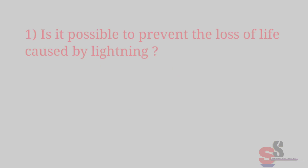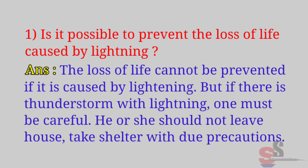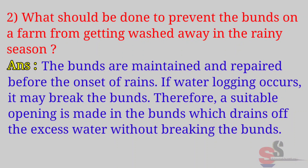Textbook page 64 — Can you tell? First: Is it possible to prevent loss of life caused by lightning? Answer: The loss of life cannot be prevented if it is caused by lightning. But if there is a thunderstorm, one must be careful and not leave the house. Second: What should be done to prevent the bunds on a farm from getting washed away in the rainy season? Answer: The bunds are maintained and repaired before the onset of rains. If waterlogging occurs, it may break the bunds; therefore, a suitable opening is made to drain off excess water without breaking the bunds.